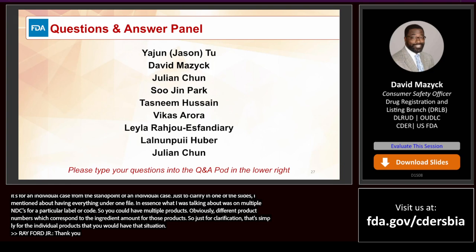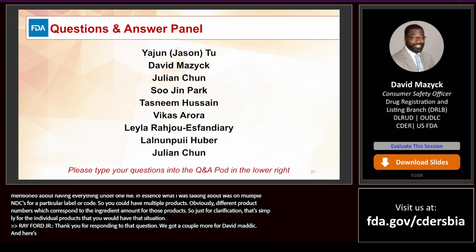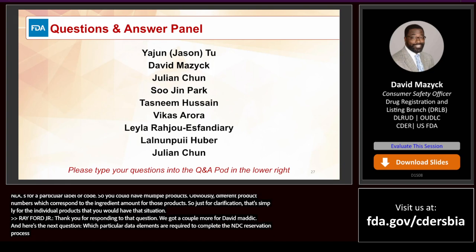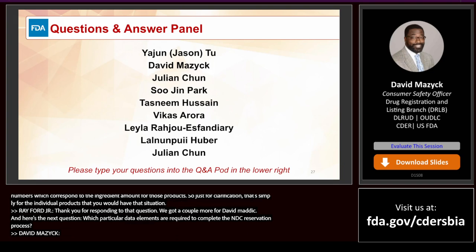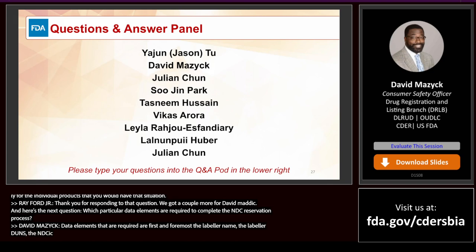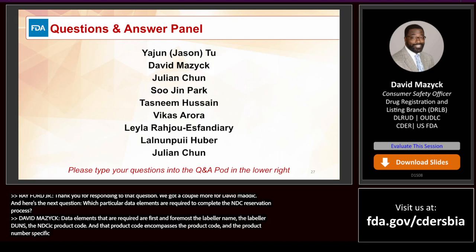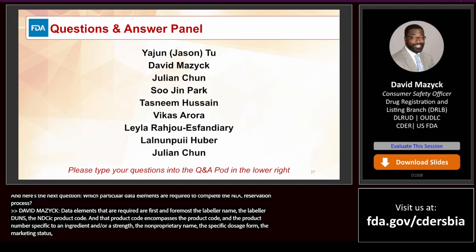Question: Which data elements are required to complete the NDC reservation process? The required elements are: the labeler name, the labeler DUNS, the NDC product code (which encompasses the labeler code and product number specific to an ingredient and/or strength), the non-proprietary name, the specific dosage form, the marketing status, the reserved-until date, and finally one active ingredient.